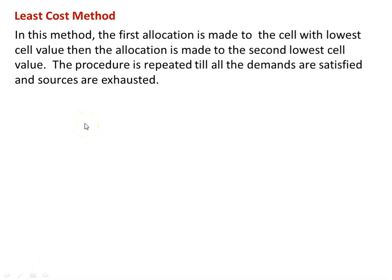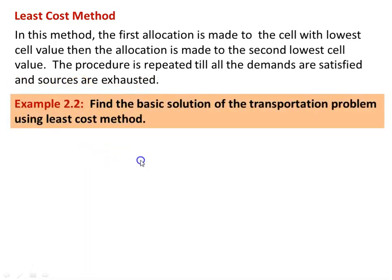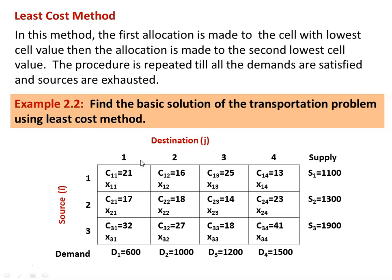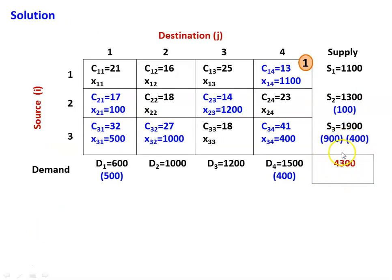The next method is the Least Cost method. In this method, the first allocation is made to the cell with the lowest cost value, then to the second lowest, and so on. The procedure is repeated until all demands are satisfied and all sources are exhausted. We take example 2.2 with 3 sources and 4 destinations. Demand: D1=600, D2=1000, D3=1200, D4=1500. Supply: S1=1100, S2=1300, S3=1900. Total supply = total demand = 4,300 — balanced problem.